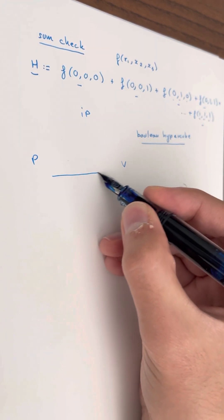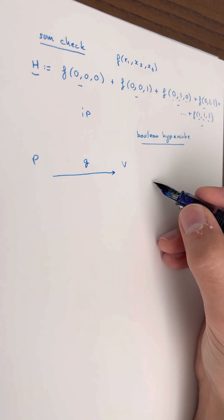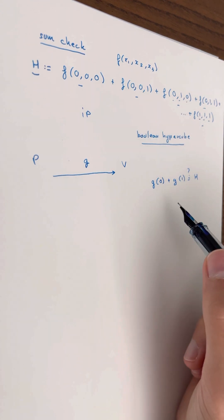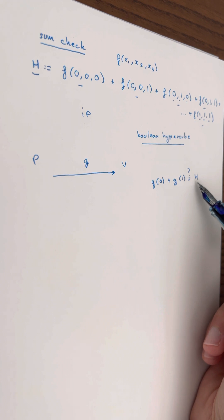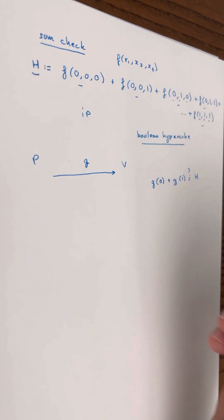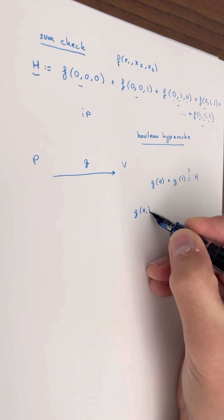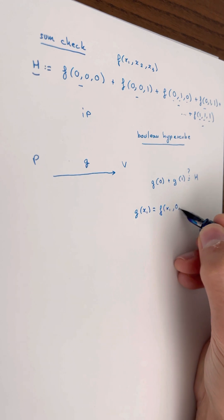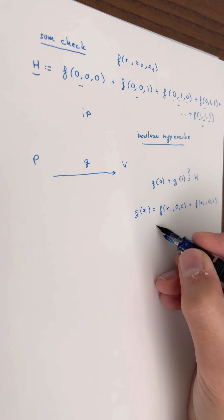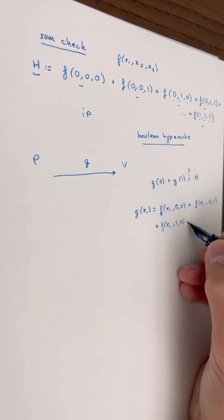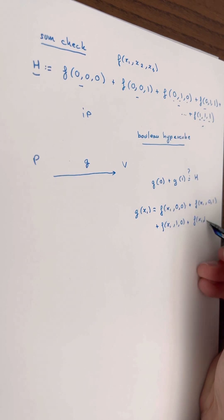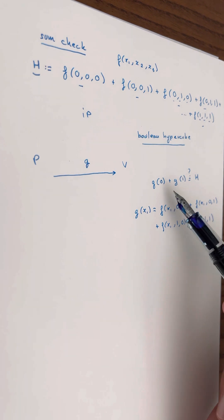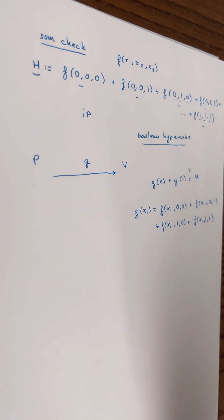The first thing that the prover does is send a polynomial G to the verifier. The verifier checks that G(0) plus G(1) is equal to H. This tells the verifier that if G is correctly formed, then H is indeed the sum of this polynomial. What do I mean by G is correctly formed? It means that G of x1 — G is univariate, only one variable — G(x1) equals F(x1,0,0) plus F(x1,0,1) plus F(x1,1,0) plus F(x1,1,1). If G(x1) equals that sum and is correctly formed, then we've proven that H is the sum.